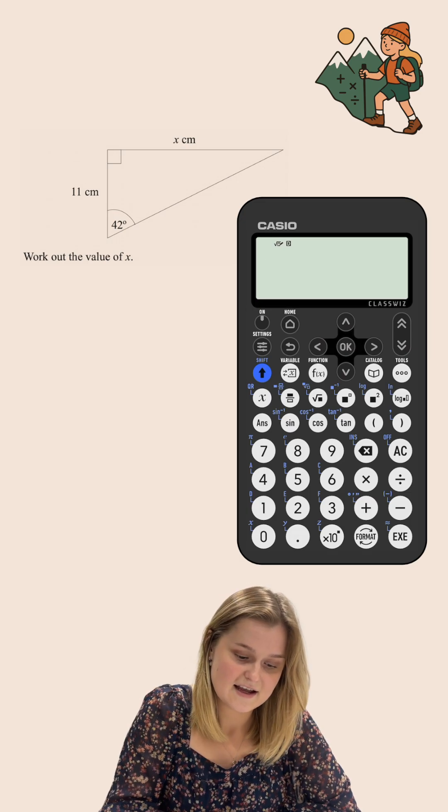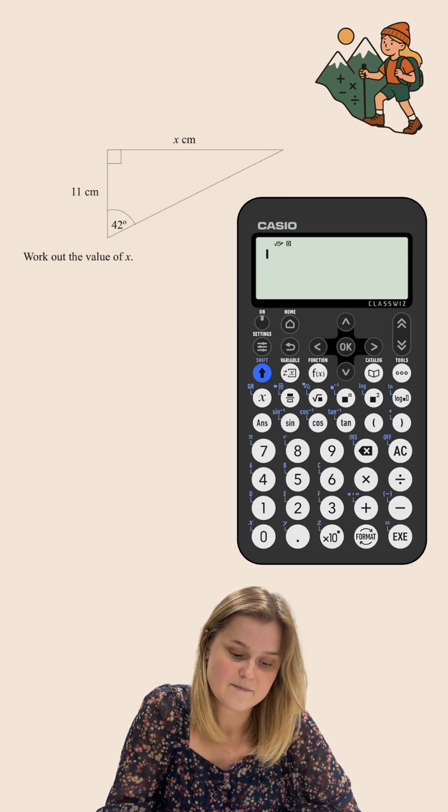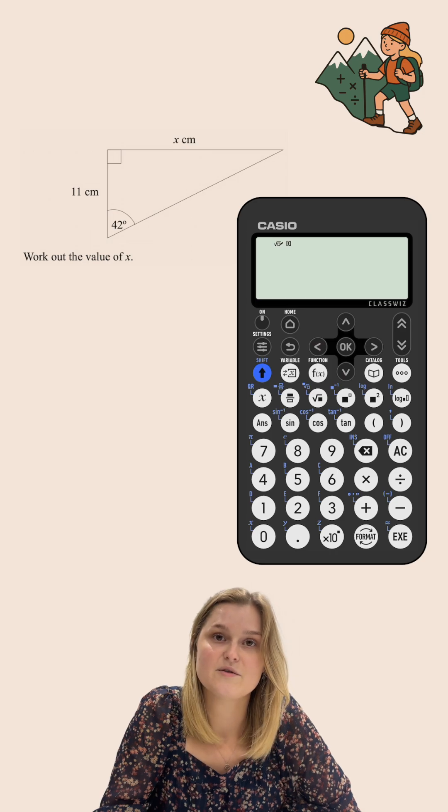Work out the value of x. Now x is this side length here that is opposite to this 42 degree angle.